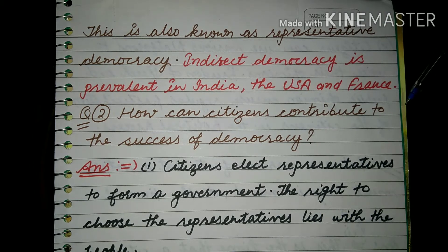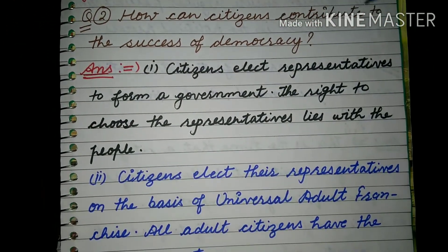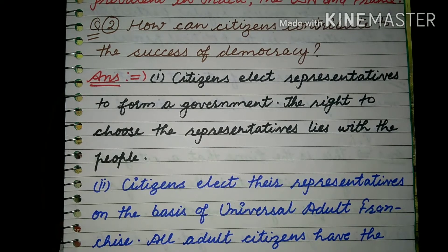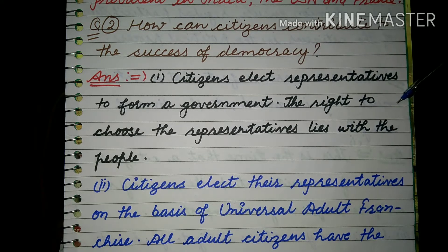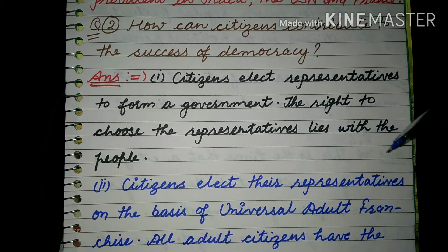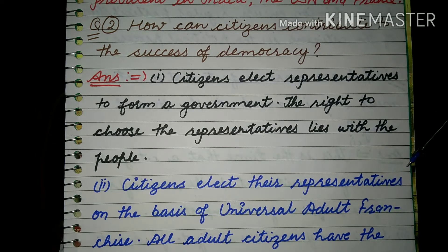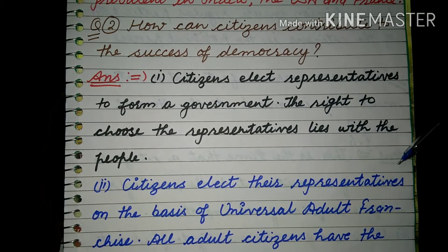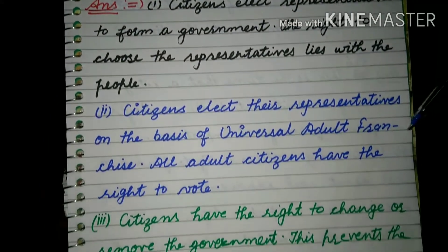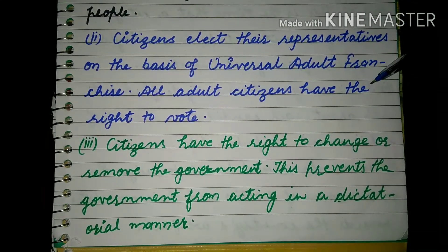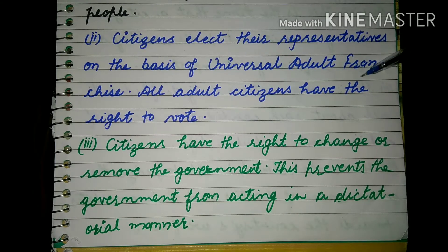Second question: how can citizens contribute to the success of democracy? Citizens elect representatives to form a government. The right to choose the representatives lies with the people. Citizens elect their representatives on the basis of universal adult franchise, meaning all adult citizens have the right to vote.